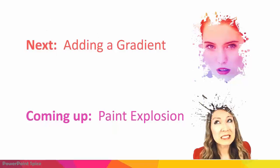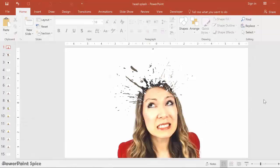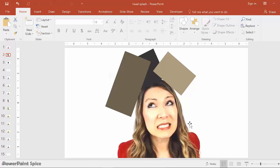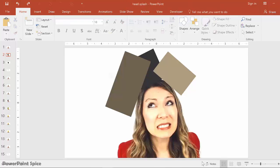That's it for this — let's now move to the mind explosion effect. The way to do this is actually very similar to what I showed you before. To start off you want to have a picture with ideally a white background. Then for the pieces that are going to explode out, you want to have some rectangles or shapes that are approximately the same color as the piece that's about to explode.